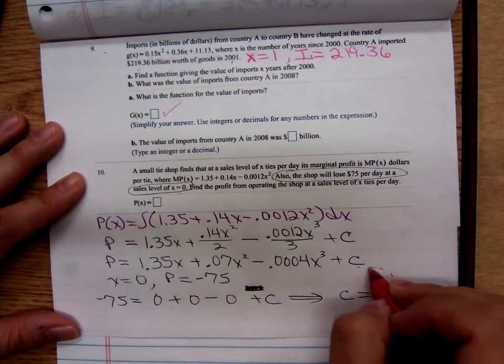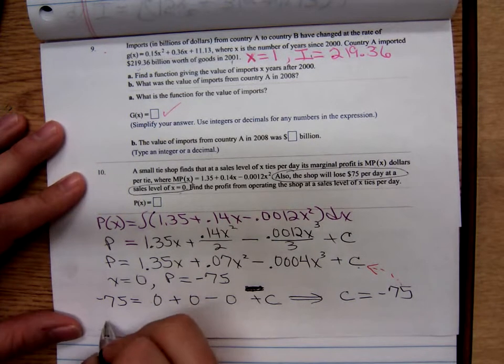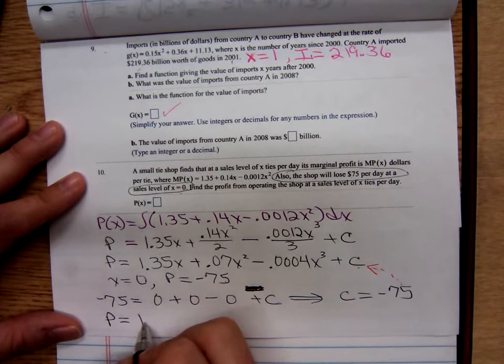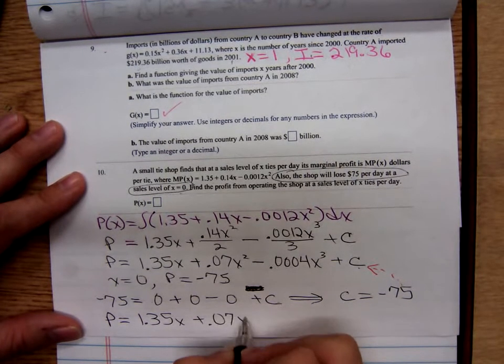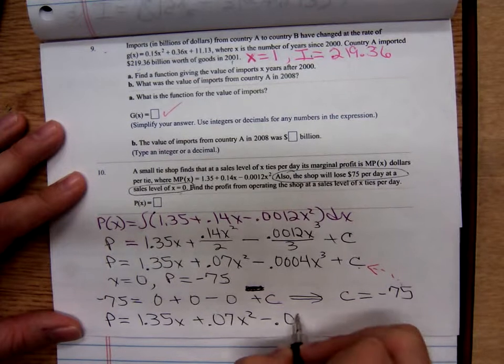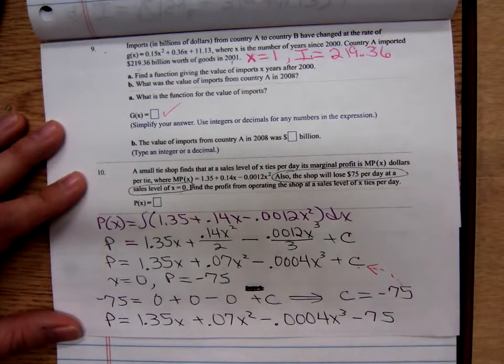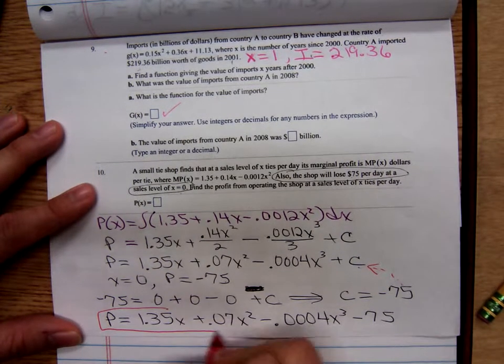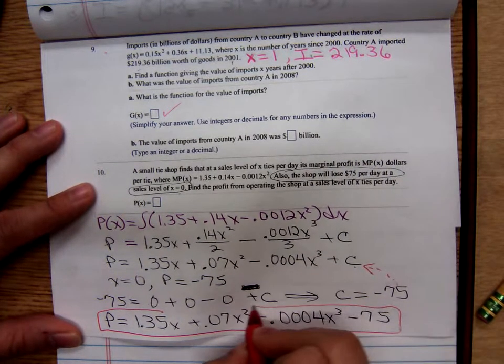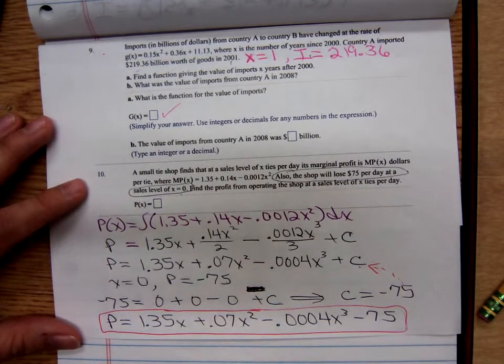So negative 75 should be the C value. So my profit function then is 1.35x plus 0.07x squared minus 0.0004x cubed and a minus 75, for my final answer.